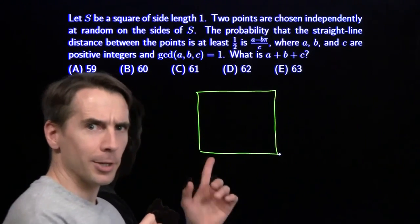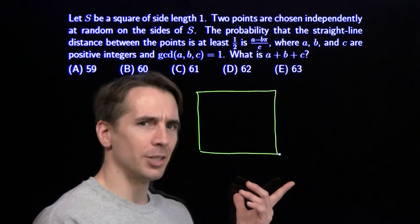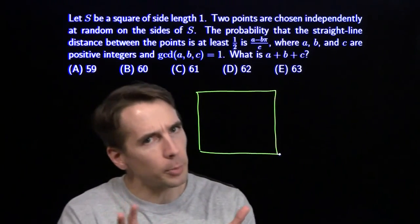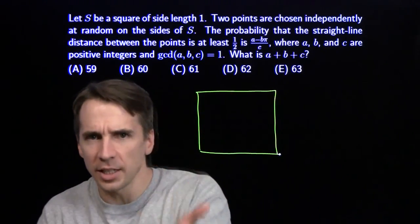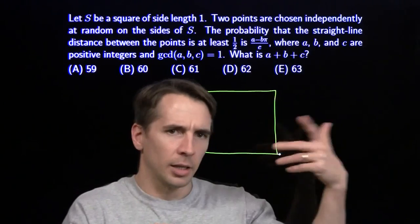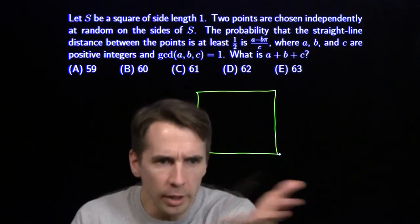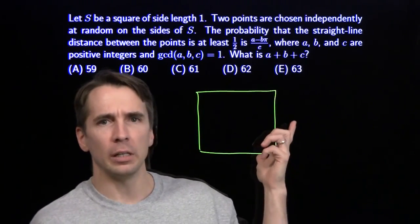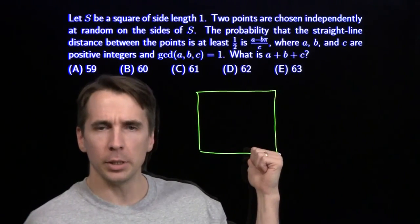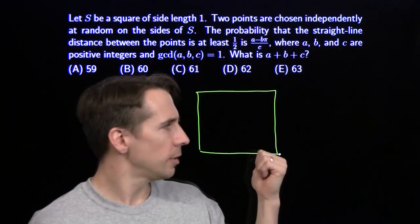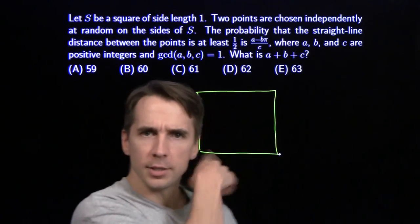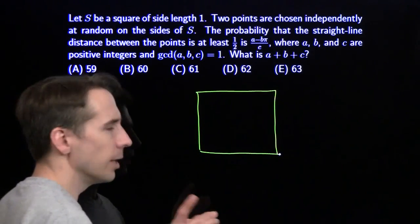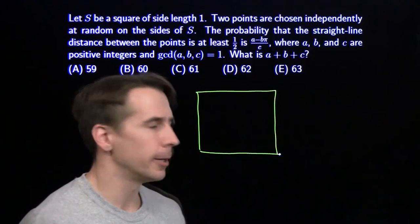We've got our square. Now it starts to get tricky because usually what we do in these probability problems is we count the number of successes, count the number of equally likely possibilities and divide. But there are infinitely many possibilities for how we can choose two points on the sides of this square. So if that approach isn't going to work, we're going to need something smarter.